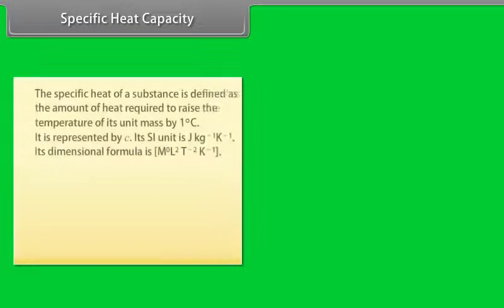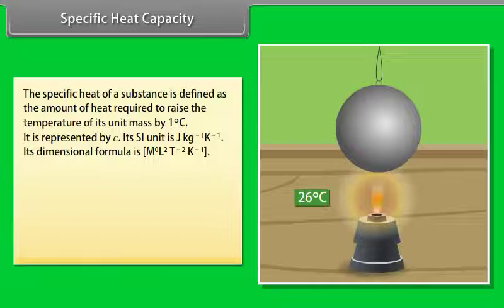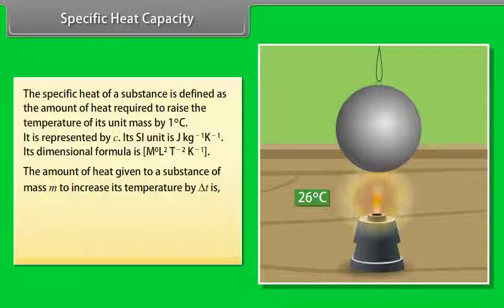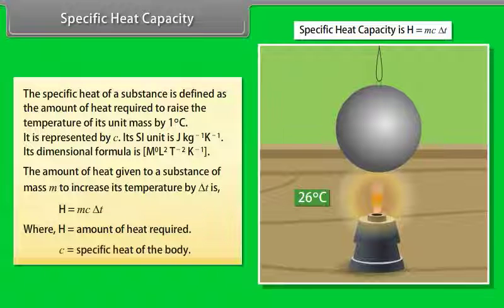Specific heat capacity of a substance is defined as the amount of heat required to raise the temperature of its unit mass by 1°C. It is represented by C. Its SI unit is J·kg⁻¹·K⁻¹ and its dimensional formula is M⁰L²T⁻²K⁻¹. The heat given to a substance of mass M to increase its temperature by ΔT is H = MCΔt, where C is the specific heat of the body.